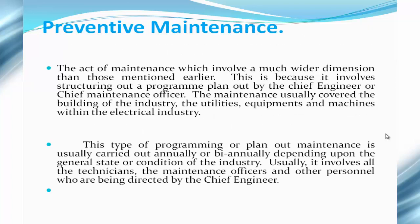The preventive maintenance involves a much wider dimension than the daily and periodic maintenance, because it involves structuring out a program plan by the chief engineer or chief maintenance officer. It usually covers the buildings of the industry, the utilities, and the equipment and machines. This type of maintenance is usually carried out annually or biannually depending upon the general state of the industry, and it involves all the technicians, maintenance officers, and other personnel directed by the chief engineer.